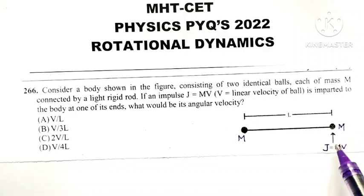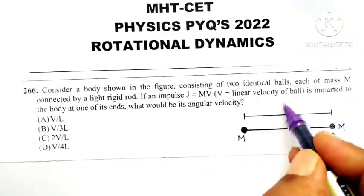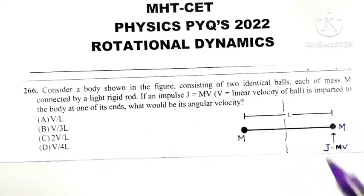We know that the effect of applying an impulse is that the system starts rotating about an axis which is passing through its center.